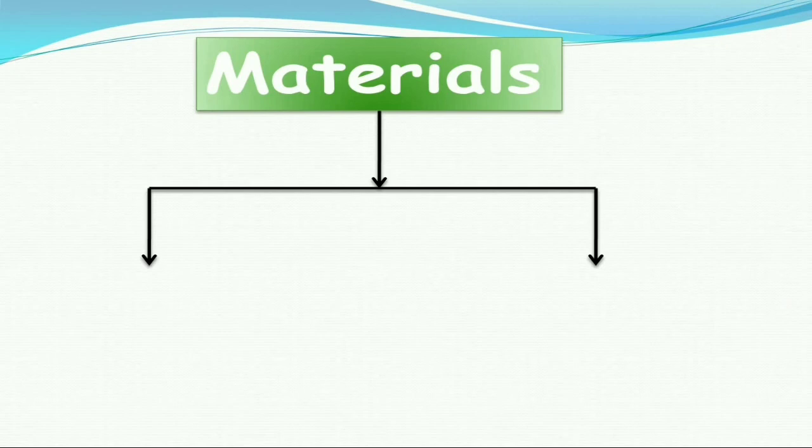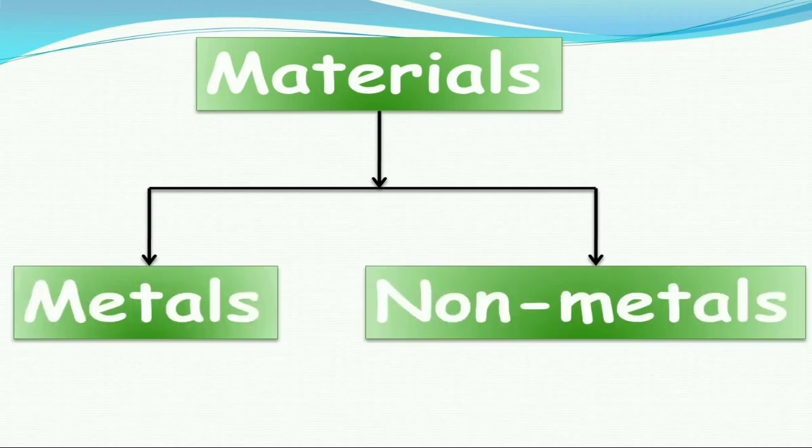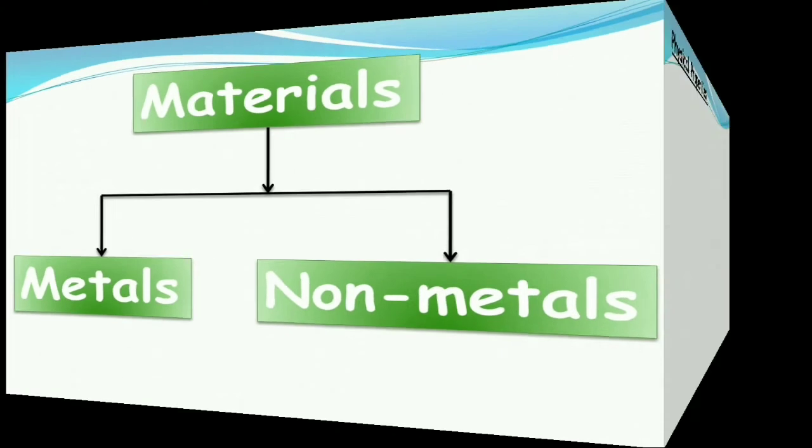Most materials are divided into two types: metals and non-metals. Let us differentiate metals and non-metals by checking their properties.